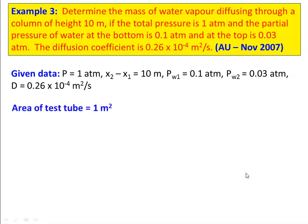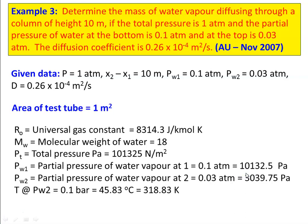We take area equal to 1 meter square. The universal gas constant R0 is 8314.3 joules per kilogram per Kelvin. Molecular weight of water equals 18. Total pressure is 1 atmosphere, which is 101325 Newtons per meter square. PW1, partial pressure of water vapor, is 0.1 atmosphere, which is 10132.5 Pascal. PW2, partial pressure of water at the top, is 0.03 atmosphere, which is 3039.75 Pascal.